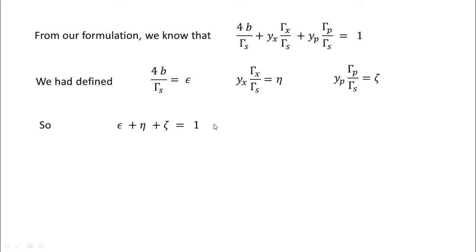From our formulation, we know that 4b by gamma_s is the fraction of electrons supplied to oxygen. Y_x gamma_x by gamma_s is the fraction of electrons supplied to biomass, and Y_p gamma_p by gamma_s to product. These fractions must equal 1. Therefore, we had defined 4b by gamma_s as epsilon, Y_x gamma_x by gamma_s as eta, and Y_p gamma_p by gamma_s as psi. So epsilon plus eta plus psi equals 1.